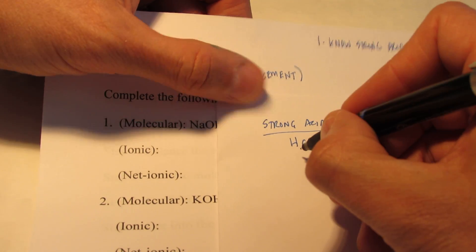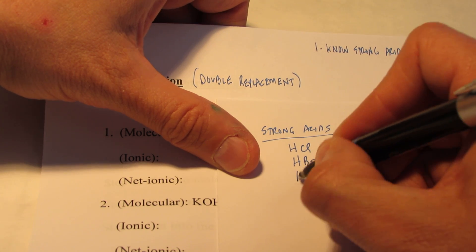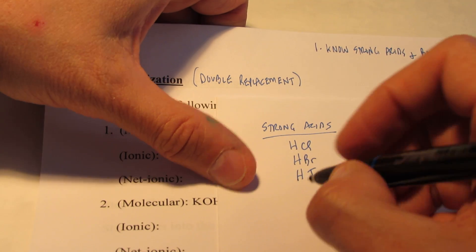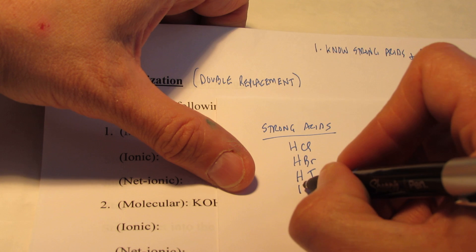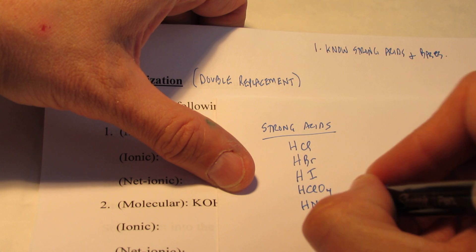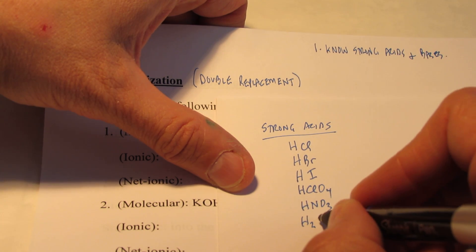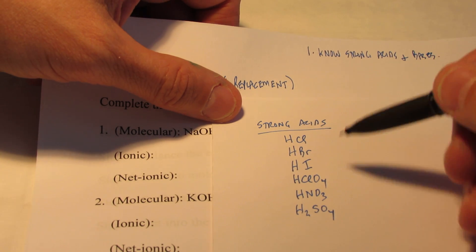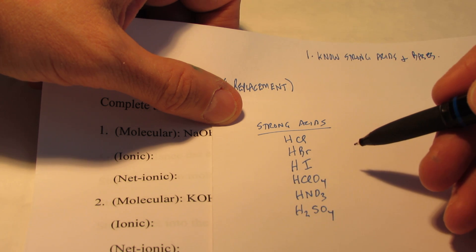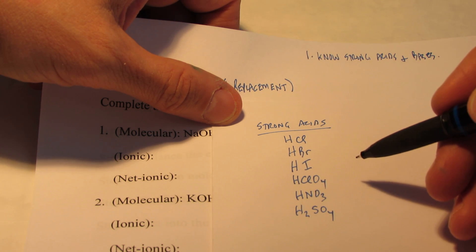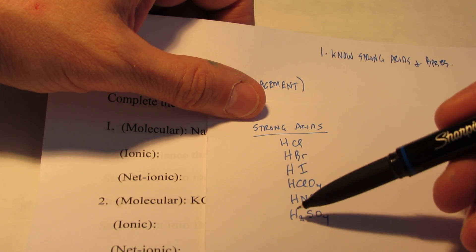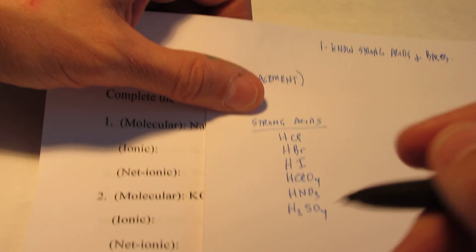There's hydrochloric acid, hydrobromic acid, hydroiodic acid — these are three binary acids. The other strong acids are oxy acids: HClO4 perchloric acid, HNO3 nitric acid, and H2SO4 sulfuric acid. You need to remember that strong acids dissociate 100% of the time when placed in water. Dissociate means they split up into hydronium ions and their negative ion 100% of the time.